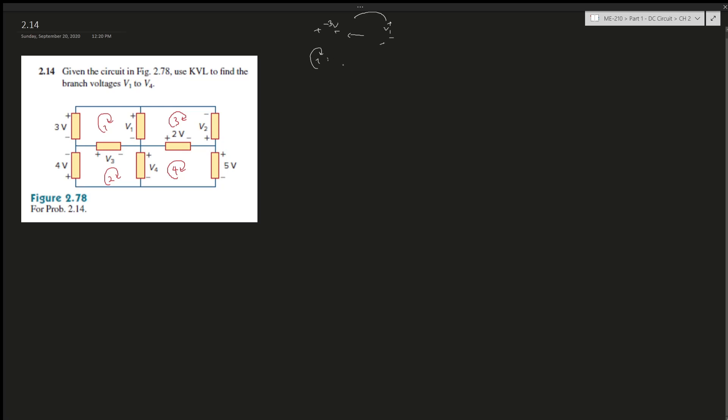So it's negative 3v plus v1 minus v3, all right. That gives us zero and we can leave it like that. Hopefully we can figure it out from the other loops.